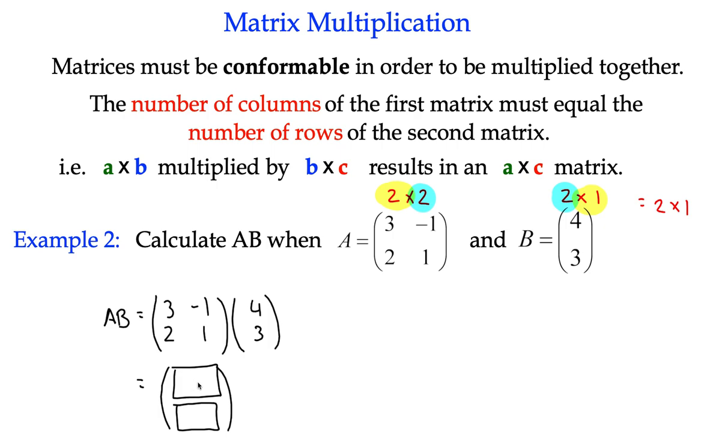Well, to get the first one, the first element in the top, then what we do is I'm going to highlight it here. So we take all of the numbers in the top row and we multiply them by the matching numbers in the first column of the second one. So in other words, we're going to match up the first terms, which are 3 and 4. So I'm going to multiply 3 and 4.